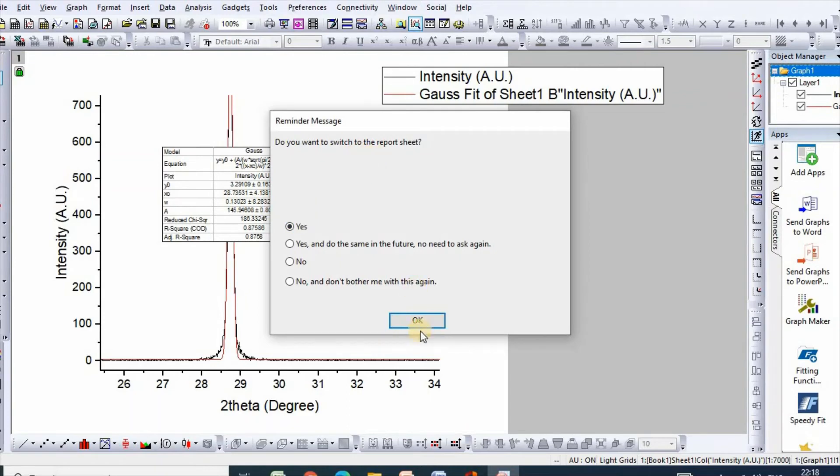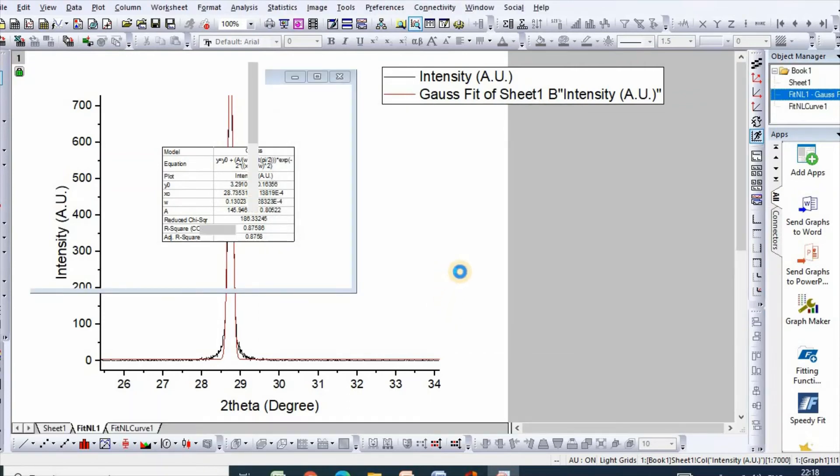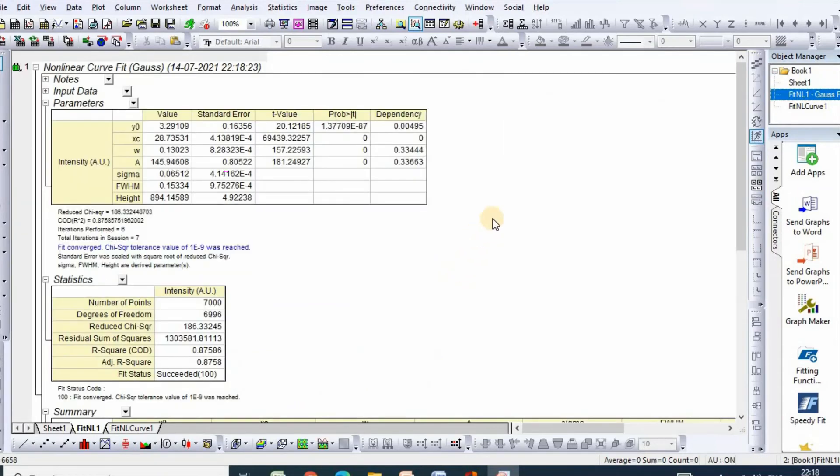If you click yes then your data will be exported. Here is your necessary data for calculation of crystallite size where Xc is peak position which is 28.7353 for my sample and full width at half maxima is 0.15334. I will use these two values for calculation of crystallite size.